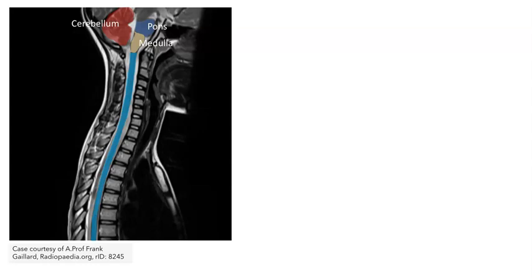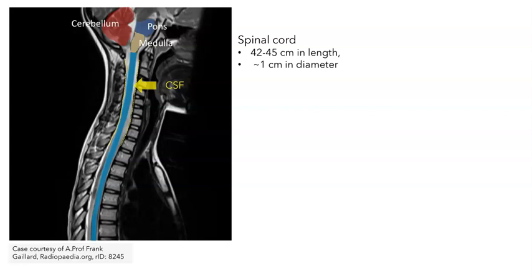Like the brain, the spinal tissue is surrounded by three protective meninges layers, and it's bathed with cerebrospinal fluid, which is continuous with that in the brain. In adult humans, the spinal cord ranges from about 42 to 45 centimeters in length, depending on how tall you are. It's about one centimeter in diameter, but this varies depending on where you are along the length of the spinal cord.